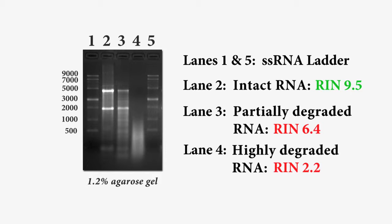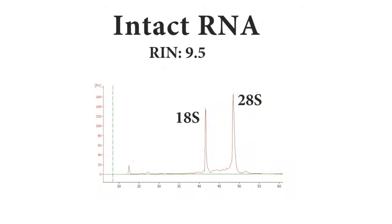For eukaryotic samples, intact total RNA will have sharp, clear bands corresponding to 28S and 18S. The 28S rRNA band should be approximately twice as intense as the 18S rRNA band. This 2 to 1 ratio is a good indication that the RNA is completely intact.